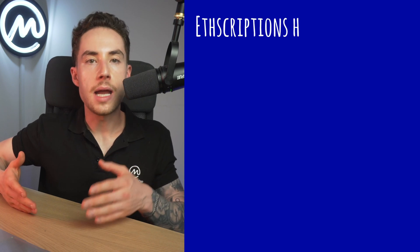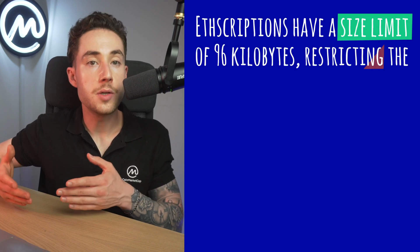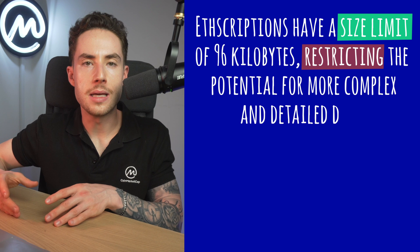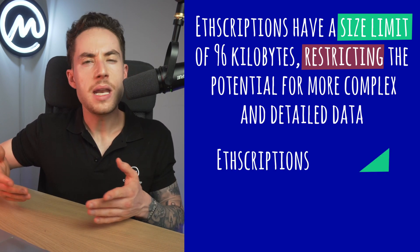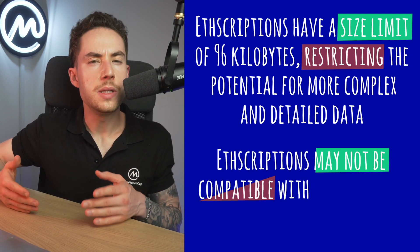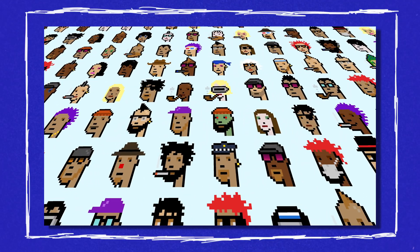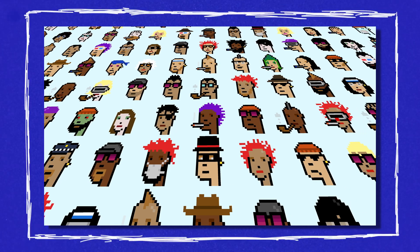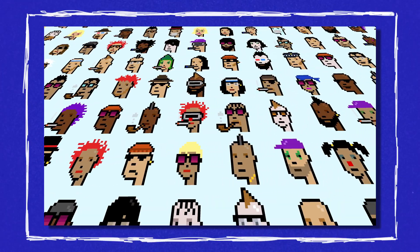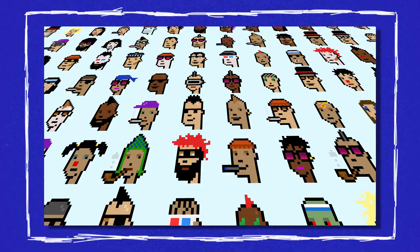ETHSCRIPTIONS have a size limit of 96 kilobytes, restricting the potential for more complex and detailed data at the time of this video. ETHSCRIPTIONS may also not be compatible with some existing NFT platforms or standards. The most significant ETHSCRIPTION collection is Ethereum Punks — a collection of 10,000 ETHSCRIBED Punks on Ethereum — which minted out within hours of the launch.